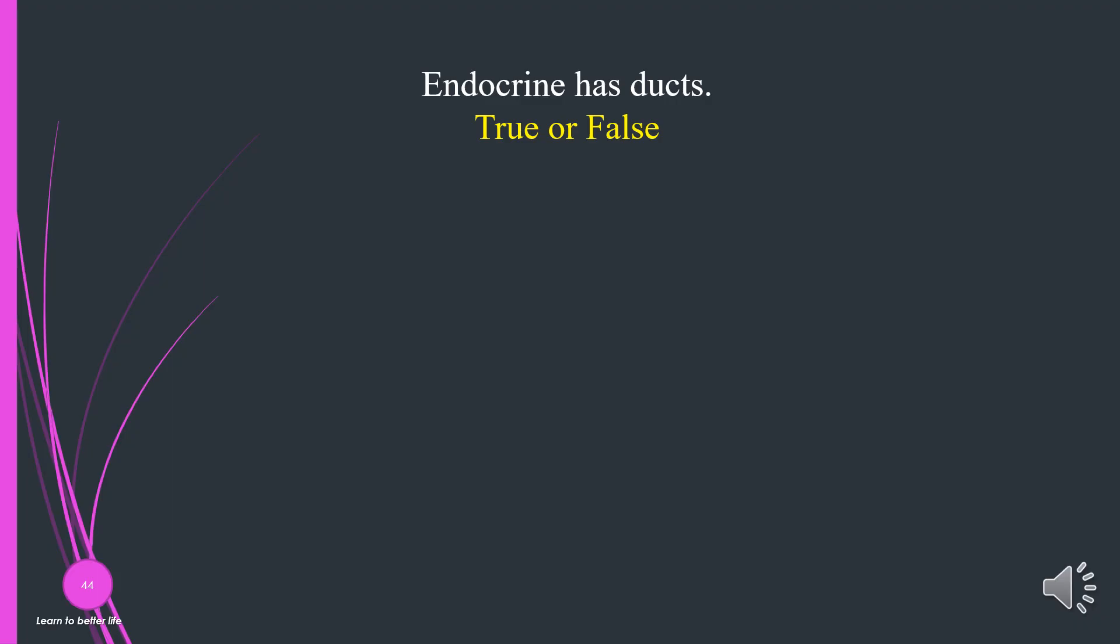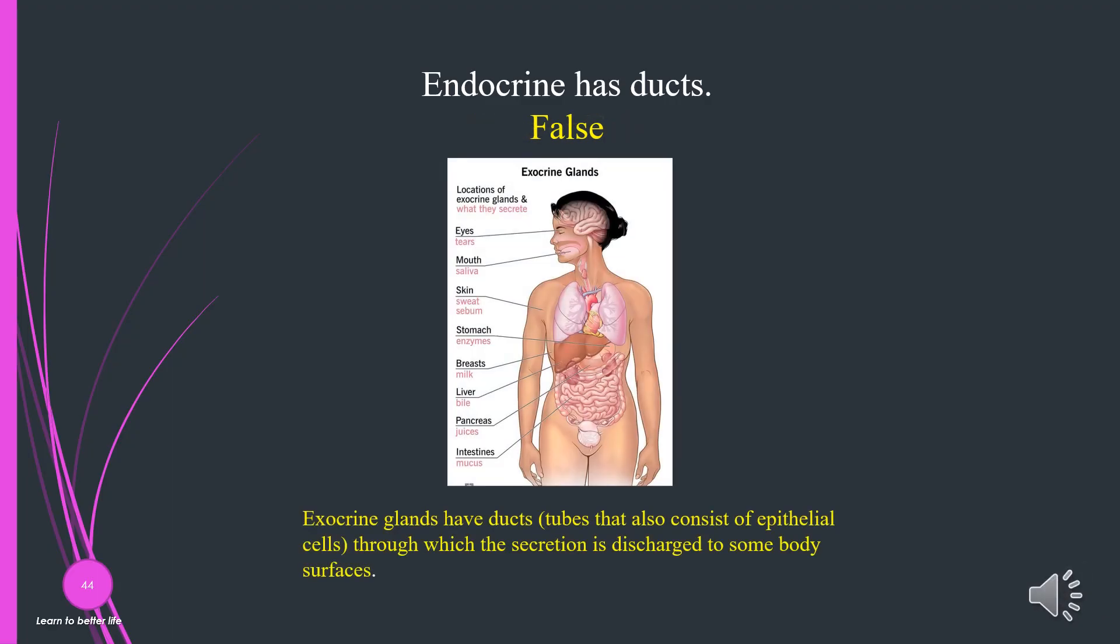Endocrine has ducts. True or false? False. Only exocrine glands have ducts, tubes that also consist of epithelial cells, through which the secretion is discharged to some body surfaces.